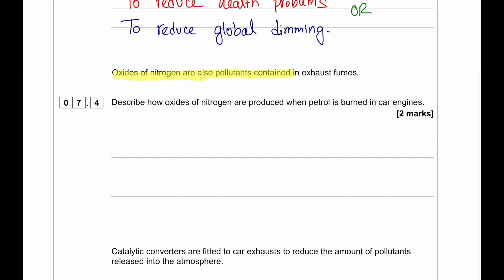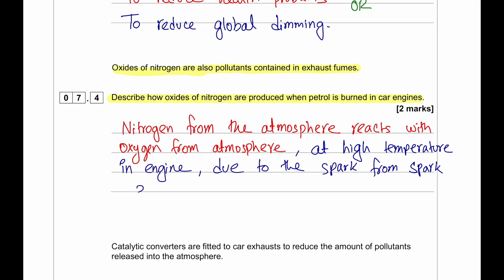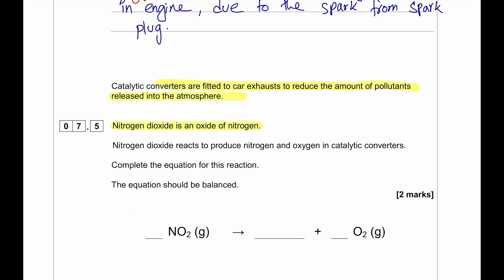Oxides of nitrogen are pollutants contained in exhaust fumes. Describe how oxides of nitrogen are produced when petrol is burned in car engines. Nitrogen from atmosphere reacts with oxygen from atmosphere at a high temperature in the car engine due to the spark plug. As the spark plug gives the spark, the nitrogen reacts with oxygen.